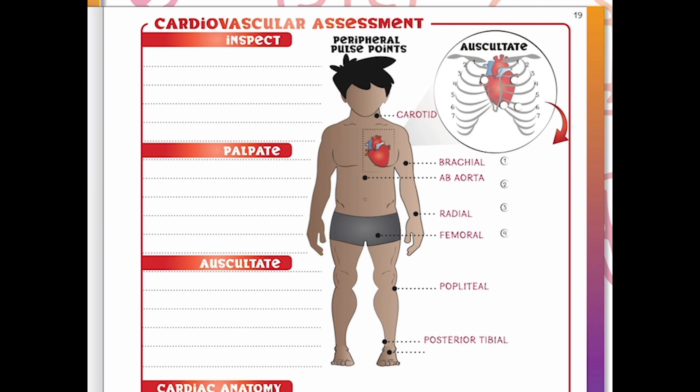Moving down is our posterior tibial pulse, located on the back of the ankle — great for assessing circulation to the lower leg and foot. With the foot slightly elevated and leg muscles relaxed, place your fingers on the inner side of the ankle just behind the ankle bone. Lastly is the dorsalis pedis, found on top of the foot just above the first and second toe, roughly in line with the big toe. This pulse point is helpful in trauma, but also in diabetics, peripheral artery disease, or any impaired vascular blood flow, where blood has difficulty reaching the extremities.